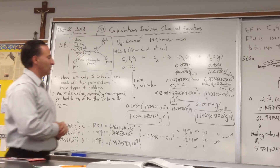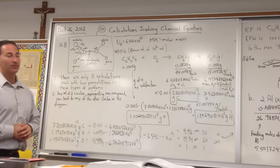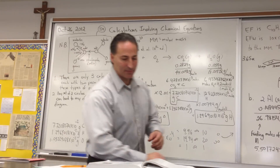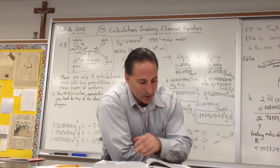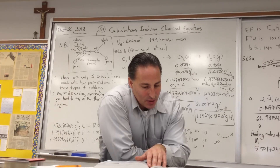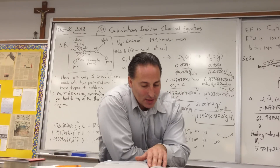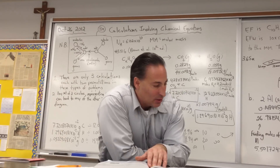In all the problems we're going to do today, we're going to assume the reaction proceeds 100%. Problem 351 asks: menthol, the substance we smell in mentholated cough drops, is composed of carbon, hydrogen, and oxygen. A 0.1005 gram sample of menthol is combusted, producing 0.2829 grams of CO2 and 0.1159 grams of water. What is the empirical formula for menthol? If the compound has a molar mass of 156 grams per mole, what is its molecular formula?